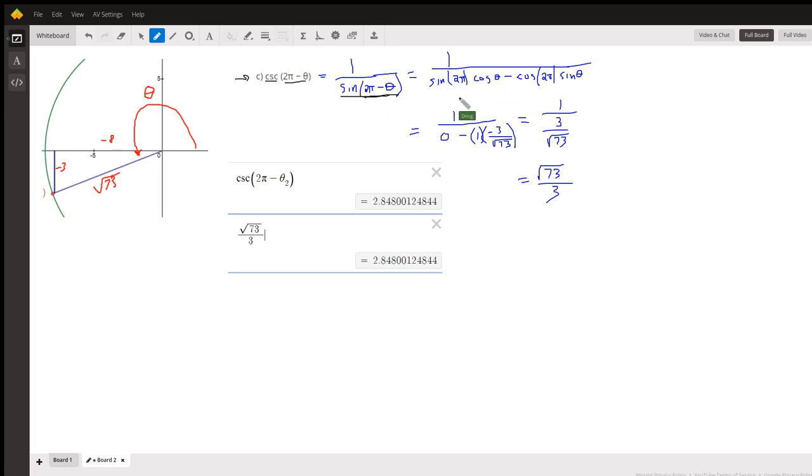But this time, the sine of 2π is zero, so we're looking at this term in the denominator. Cosine of 2π is 1. The sine of theta is opposite over hypotenuse, negative 3 over square root of 73, and these minus signs turn that denominator positive.